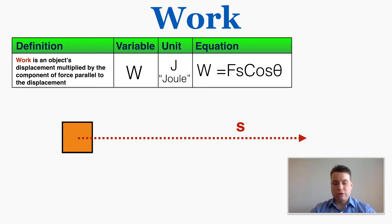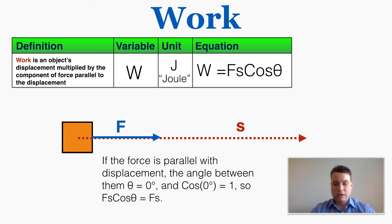Some patterns show up here. If a force is perfectly parallel with the displacement, the angle between them is 0, and cosine of 0 is just 1. So that means force times displacement times cosine is just equal to force times displacement, which makes sense because the whole force is parallel, so we don't need to worry about angles or components at all.